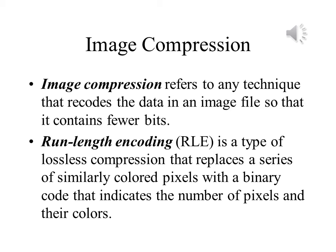Data compression is all about saving a file with fewer bytes than you would normally need. Image compression is one example of this. When we do image compression, we recode images in a manner that allows us to save them using fewer bytes. Run-length encoding is a lossless compression scheme. If you have a series of pixels with the same color next to each other, we save the number of times the color appears and the code for that color. For example, white, white, white, white, blue, blue would be saved as four white, two blue. If you have 30 white pixels in a row, the savings is significant.